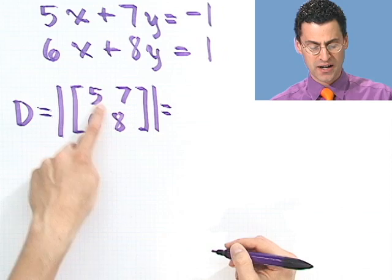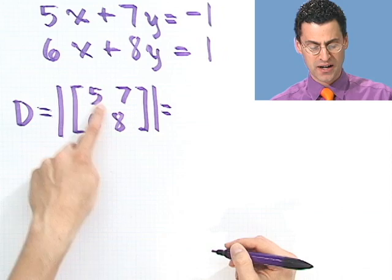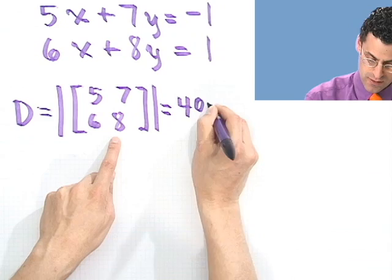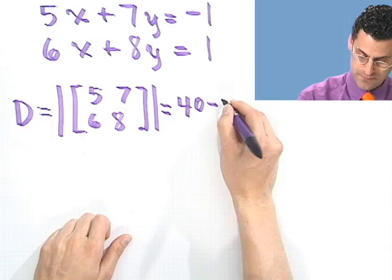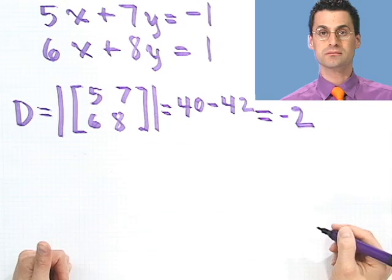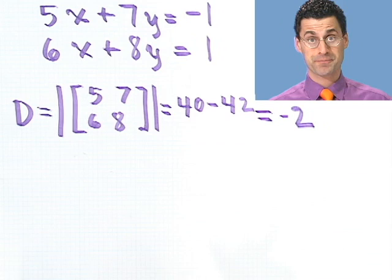So let's see what we get here. So I take 5 times 8, which is 40, and I subtract off 7 times 6, which is 42. So what's 40 minus 42? Well, it's negative 2. So in fact, I see that this determinant equals negative 2. Okay, so that's that. Is it 0? No, it's not 0. This is non-singular, so I'm okay. So let's keep going.